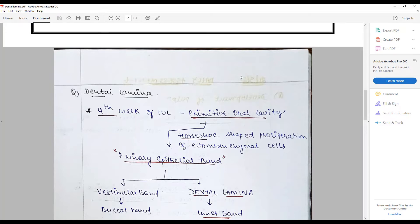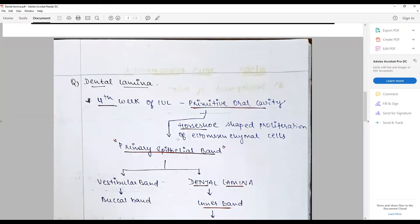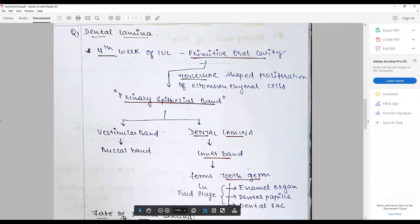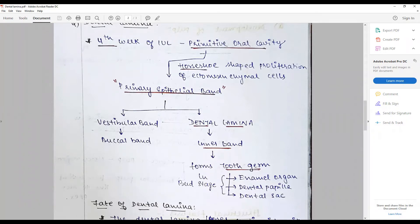At about the seventh week, that differentiates into a vestibular band or the buccal band, or the dental lamina or the inner band, that gives rise to or holds the tooth germs which in bud stage has enamel organ, dental papilla, and dental sac.